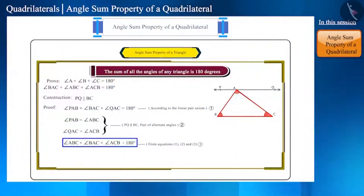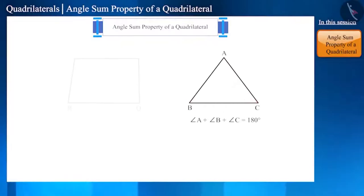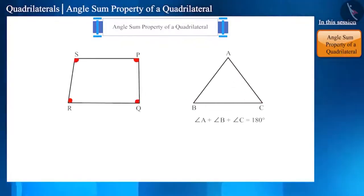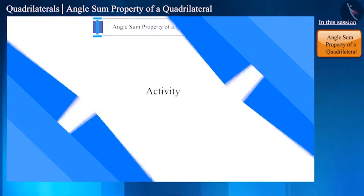Friends, we have studied the angle sum property of a triangle. We know that a triangle has three angles and the sum of the three angles of a triangle is 180 degrees. A quadrilateral has four angles. Can you guess what will be the sum of all the angles of a quadrilateral? Let's do an activity to understand it.